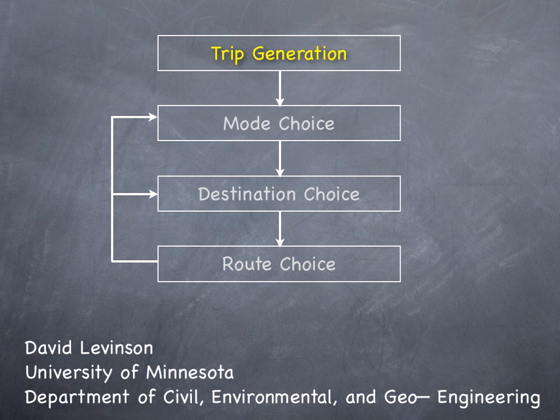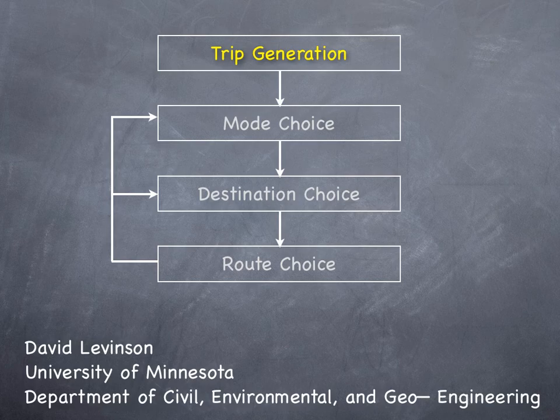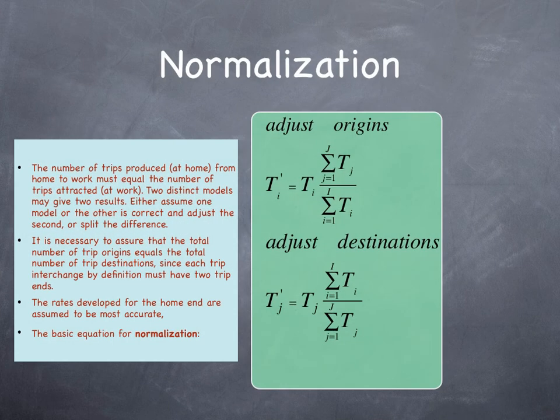In this video we're going to continue our discussion of trip generation looking at a procedure called normalization. The number of trips produced at home from home to work must equal the number of trips attracted at work. Two distinct models may give two different results.